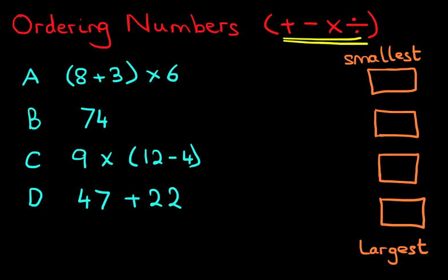Here it is. On the left hand side, we've got ABCD. And they've got a mixture of addition, subtraction and multiplication problems. On the right hand side, we've got four boxes. At the top is the smallest and at the bottom is the largest. We have to reorder ABCD from the smallest to the largest.